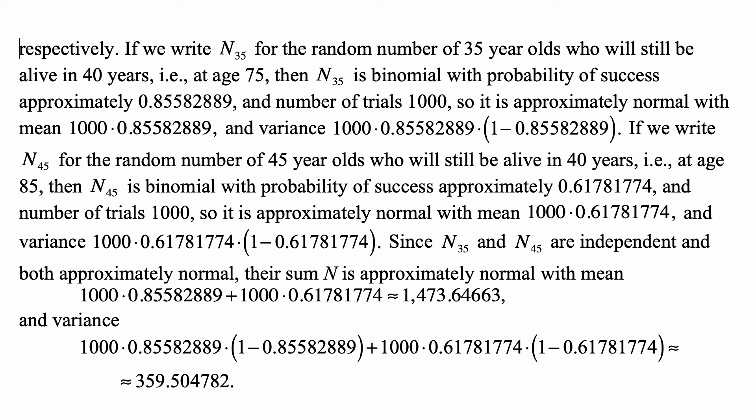Similarly, if we write N45 for the random number of 45-year-olds who will still be alive in 40 years, it follows the same reasoning. It is binomial with probability of success approximately 0.617817 and 1,000 trials, so it is approximately normal with mean 1,000 times 0.617817 and variance 1,000 times that probability times 1 minus the probability of success.